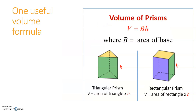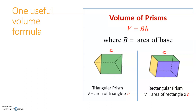The other useful piece from geometry is the volume of a prism. The volume of a prism is the area of the base times the height, where the height is the distance between the two bases. For these problems, we're actually going to think of the height as a sideways measurement — the height is still the distance between the two bases, it's just that the base generally won't be sitting on the ground.